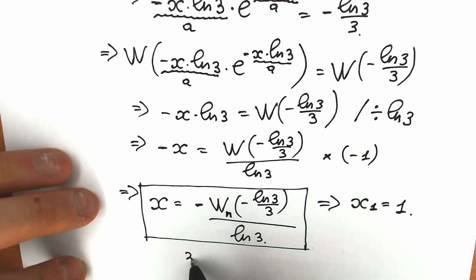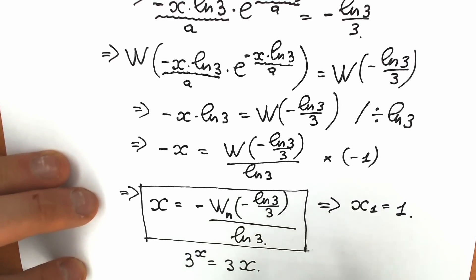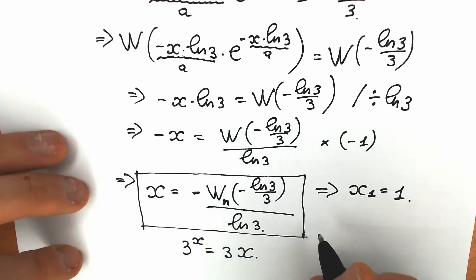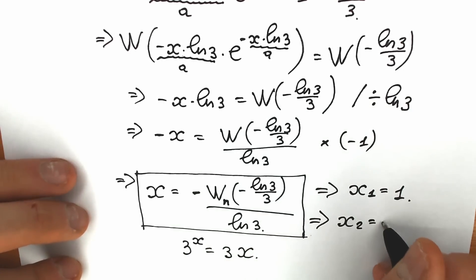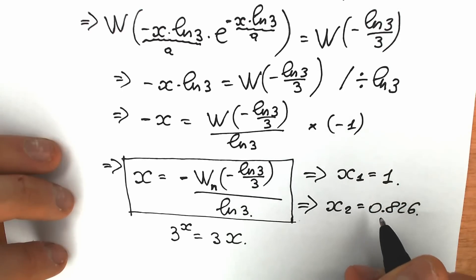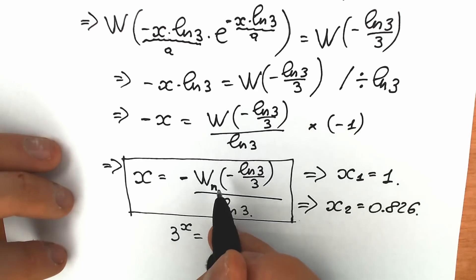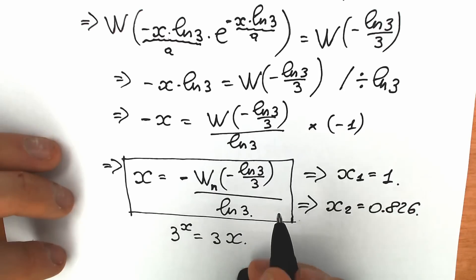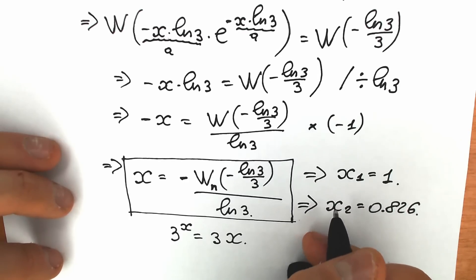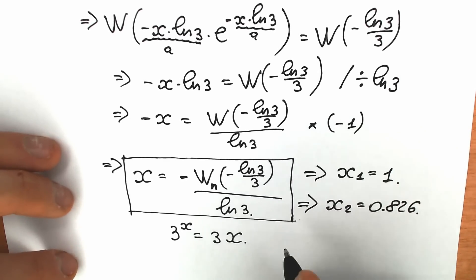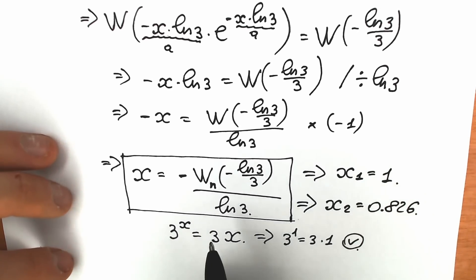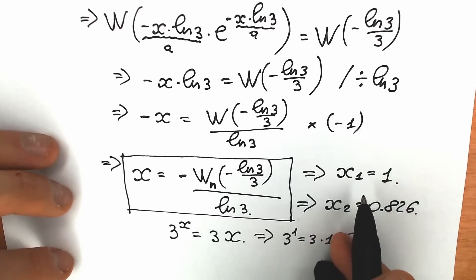Let's verify: in the original equation 3 to the x equals 3x, plugging x equals 1 gives 3 to the 1 equals 3 times 1, which is correct. But we are talking about a full solution. The second solution from the Lambert W function branches is x₂ approximately equal to 0.826. You can see a plot with two points of intersection, which confirms we have two real solutions. You can verify x₂ on your calculator.